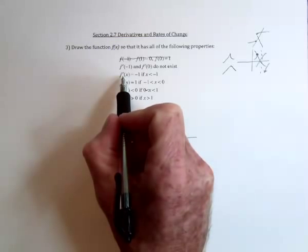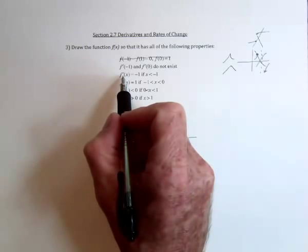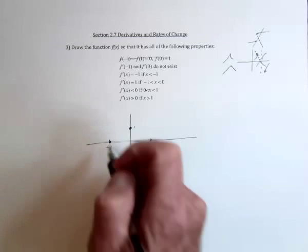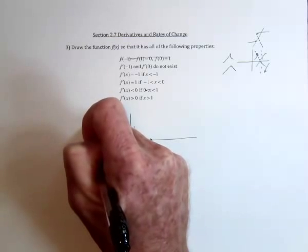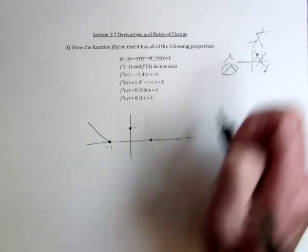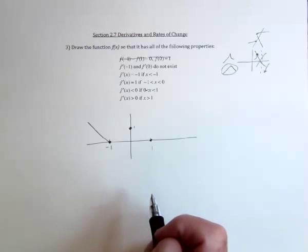Now, this says the derivative is equal to negative 1. So that means the slope of the tangent line is negative 1, and it doesn't change. And so that means it's got a line, and it's a slope of negative 1. And that says to the left of negative 1. So a slope of negative 1 will look something like this. And now, because of that, I think that it's a corner.